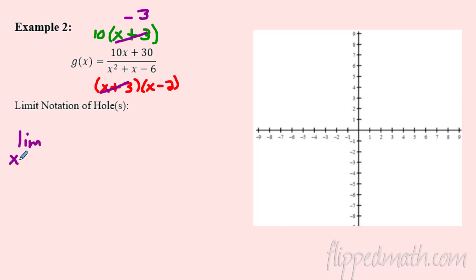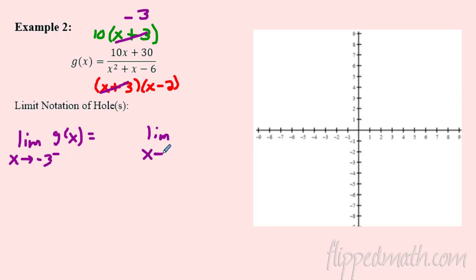Let's write the notation. We've got the limit as x approaches -3 — that's where the issue is — from the left side. We're talking about g(x), so we have to figure that out. Then from the right side as x approaches -3, the little plus means from the right. We're going to need a graph or a table of values to see what's going on.